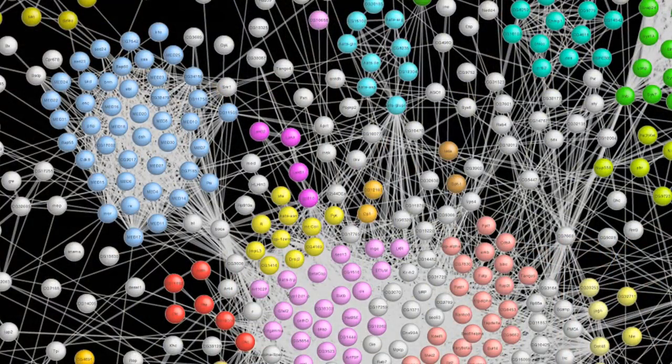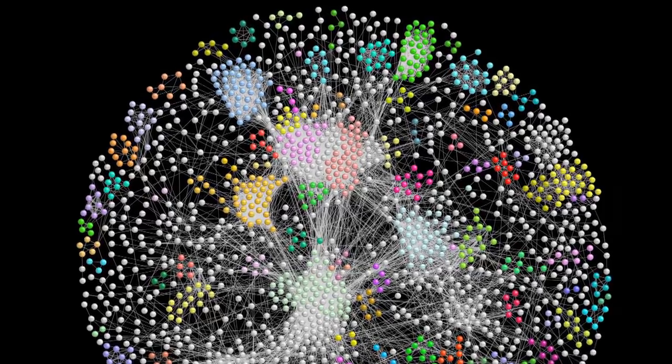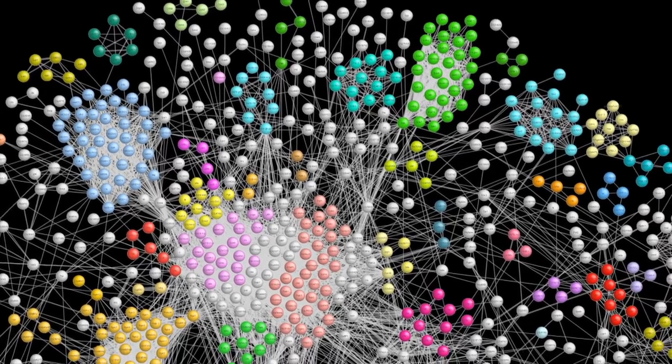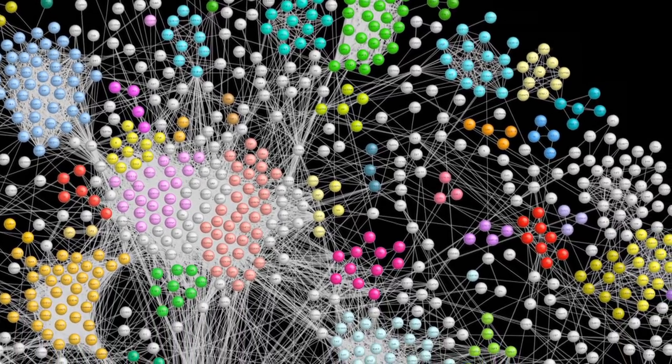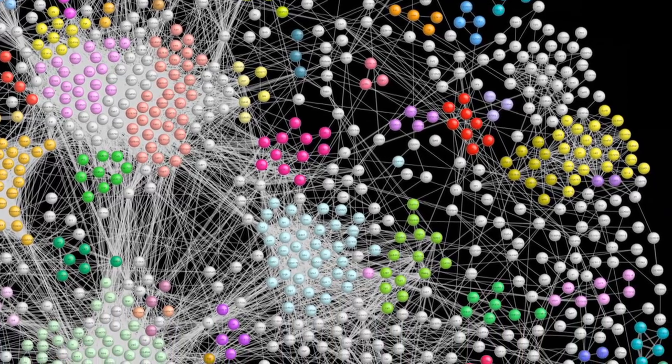In a new study, my lab built a map that shows how thousands of proteins in a fruit fly cell communicate with each other. This is very important because proteins are the cell's labor force. They talk to each other constantly and channel vital information through vast and complicated networks. When the communication is good, the cell is healthy. But when something goes wrong in that communication, the cell is not healthy, and that can cause disease.